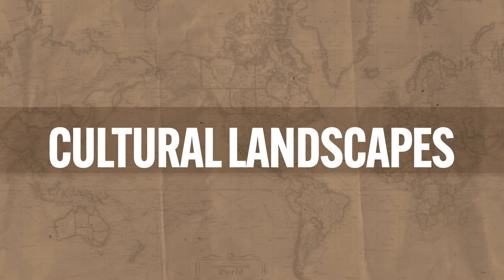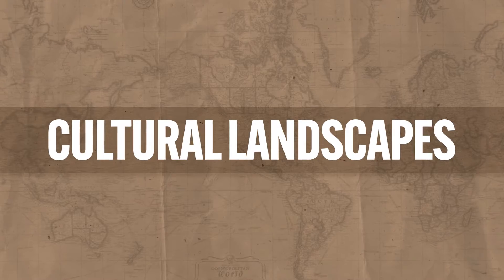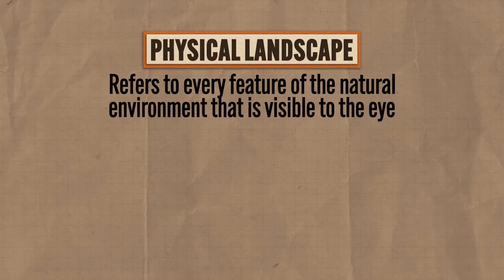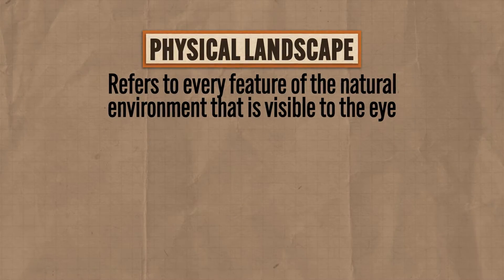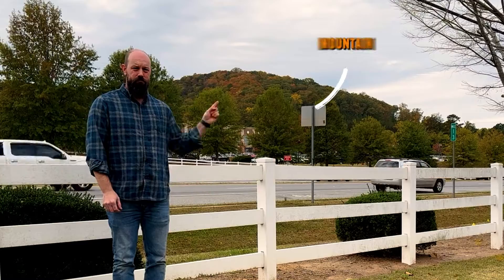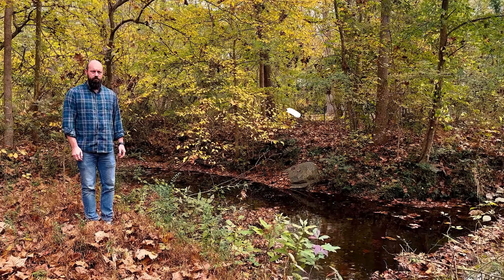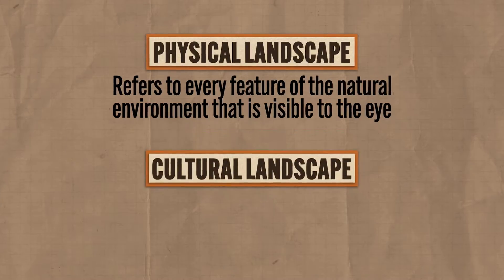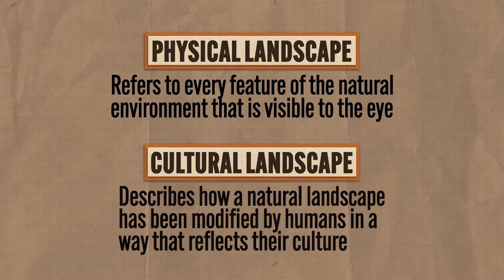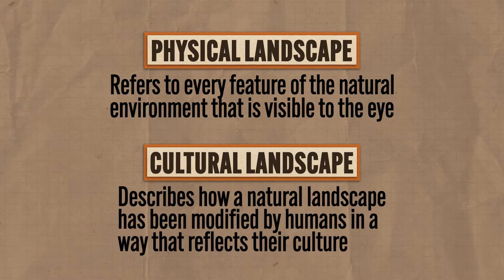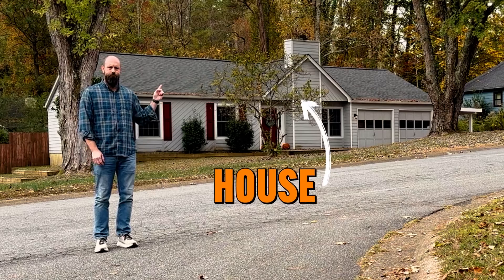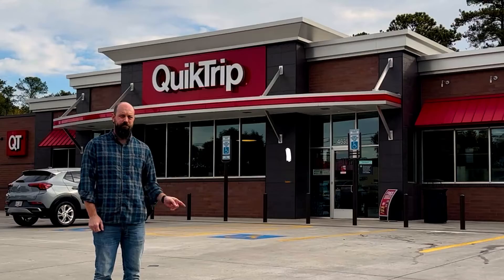Let's begin with a definition. A physical landscape refers to every feature of the natural environment that is visible to the eye — a tree, a mountain, a creek. But a cultural landscape describes how a natural landscape has been modified by humans in a way that reflects their culture — a house, a farm, a Quick Trip. All of these modifications of the natural landscape reflect a society's culture.